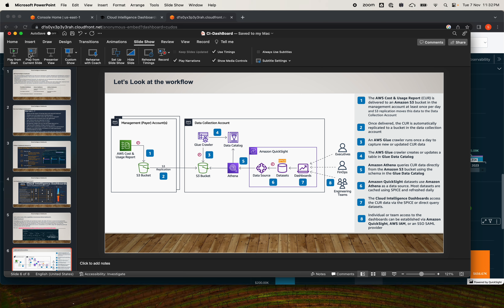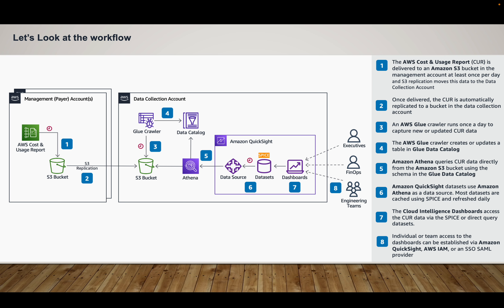Let me go back to the presentation to show you the deployment flow. If you're working in an enterprise, the management account is your payer account — that's where all billing happens. Within AWS, we have something called AWS Cost and Usage Report — AWS CUR. We configure CUR, send it to an S3 bucket at the payer level, and then configure a replication to the data collection account. It is not recommended to use the management/master account for dashboard deployment — it has to be a different member account, which we call the data collection account.